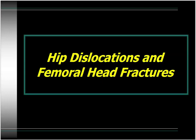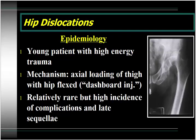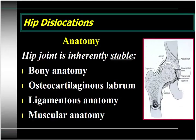Hip dislocations and femoral head fractures — intercapsular hip injuries. Hip dislocations typically occur in young patients with high-energy trauma. The mechanism is an axial load injury to the thigh with the hip flexed, the so-called dashboard injury. They're relatively rare but can have a high incidence of complications and late sequelae. Remember that the hip joint is one of the most stable joints in the body due to the combination of the bony anatomy, the femoroacetabular articulation, the strong osteocartilaginous labrum, and the multiple ligamentous and muscular structures — and therefore a hip dislocation means significant force has been imparted.